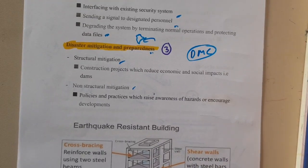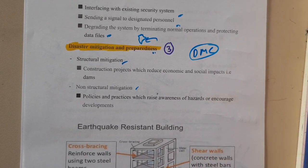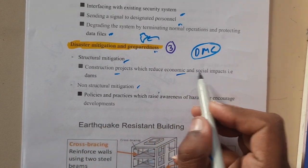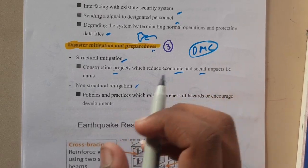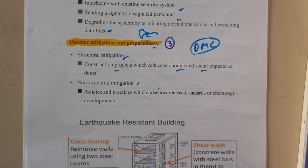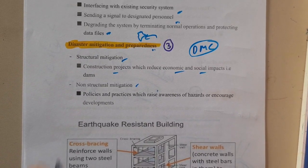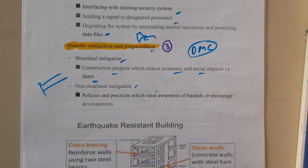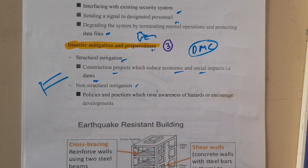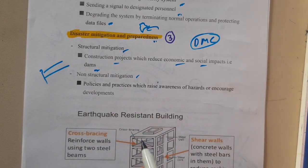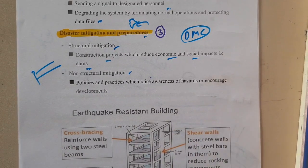Structural mitigation involves building some construction. It is a construction project which reduces the economic and social impact. The best example for this would be dams — when there is a flood, dams help reduce the damages. That comes under structural mitigation because you are constructing it.